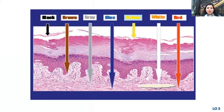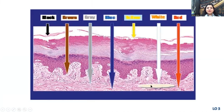Colors in dermoscopy depend on the position of a structure within the skin. If a structure is in the top part of the epidermis, it appears black. At the dermal-epidermal junction, it appears brown. In the upper dermis it appears gray. Deeper in the dermis it appears blue. White represents a scar or new collagen formation. Blood vessels appear red, and yellow usually represents crusts or serum on the skin surface.